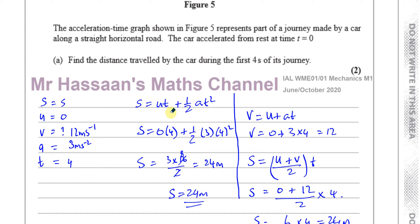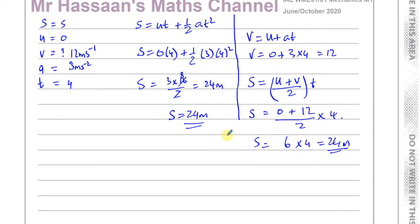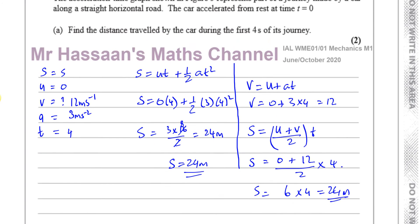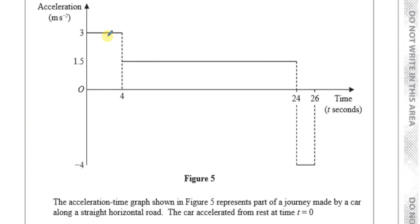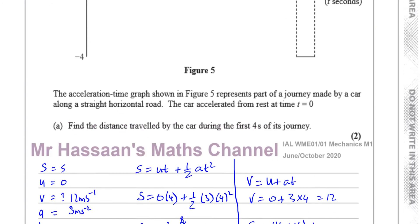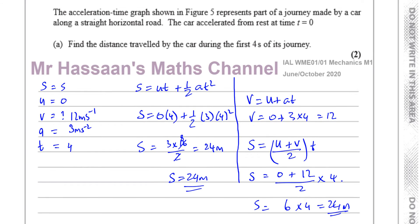The first approach is what you use if you don't want to find v first, and the second is what you use if you find v first. Both are perfectly fine. It's just constant acceleration in this section, so you can use the SUVAT equations and get the answer straight away.